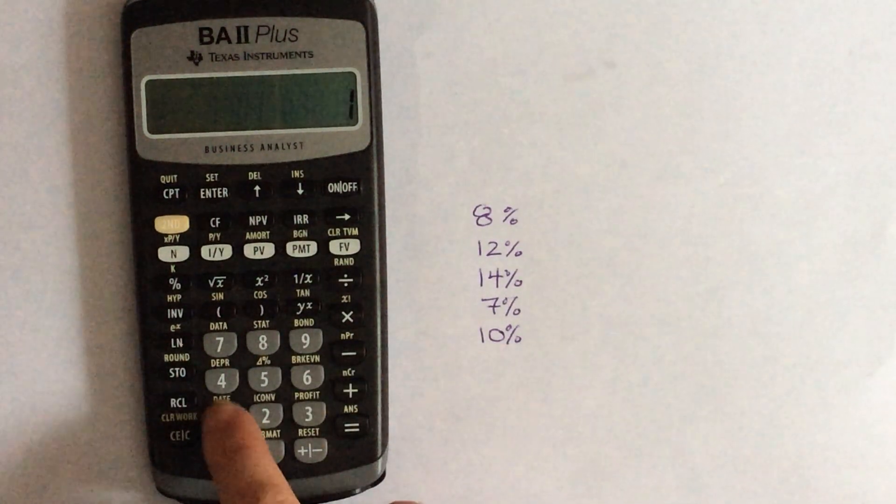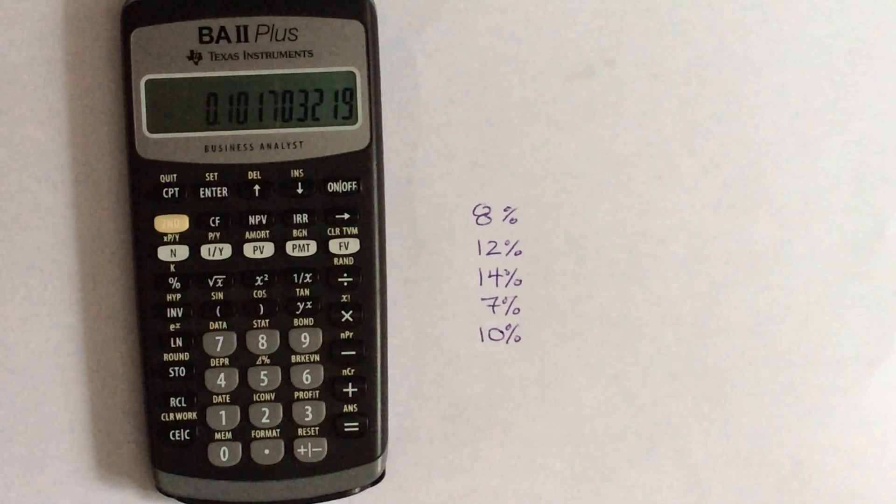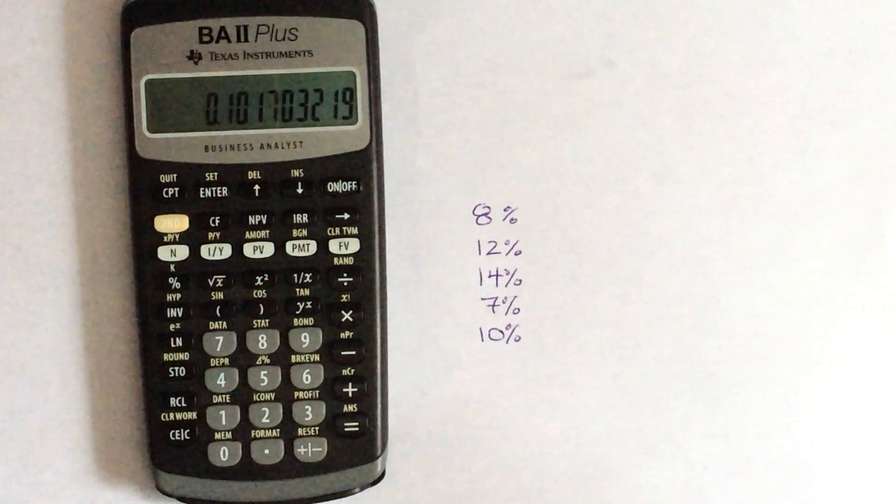And then if you're doing geometric mean, subtract 1. And you've got 10.17% as your geometric average here.